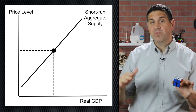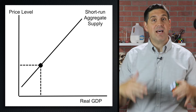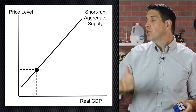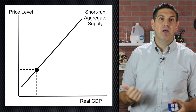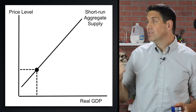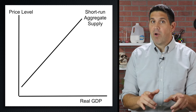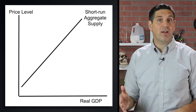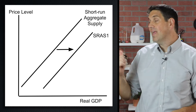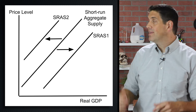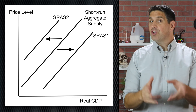And when the price level falls, producers would make less profit, so they're going to produce less output — the quantity supplied would decrease, just like a market supply curve. And just like a market graph, the supply curve can shift: increases to the right, a decrease is to the left.